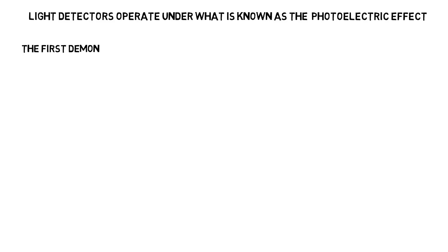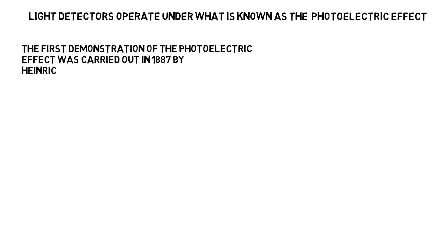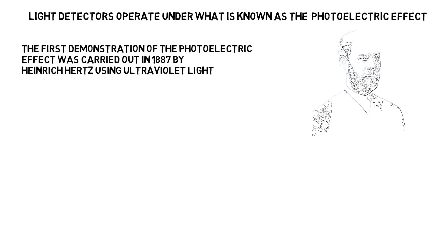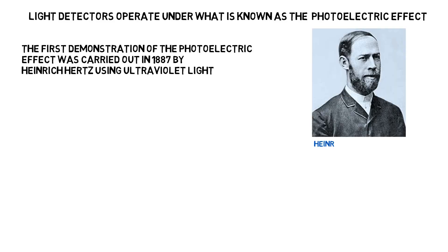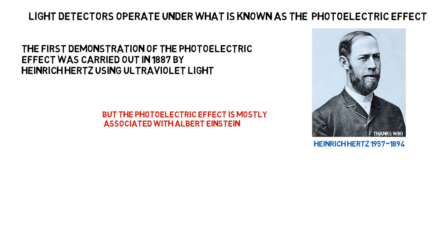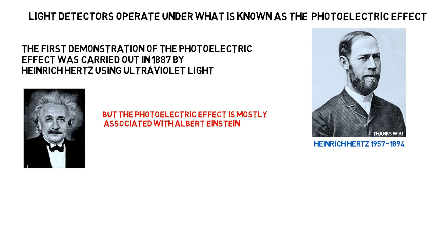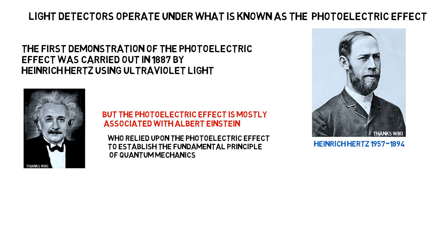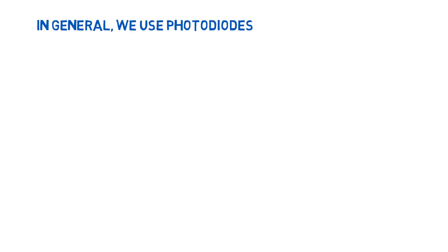Light detectors operate under what is known as the photoelectric effect. The first demonstration of the photoelectric effect was carried out in 1887 by Heinrich Hertz, who used ultraviolet light. But the photoelectric effect is mostly associated with Albert Einstein, who relied upon it to establish the fundamental principle of quantum mechanics in 1905, for which he received a Nobel Prize.